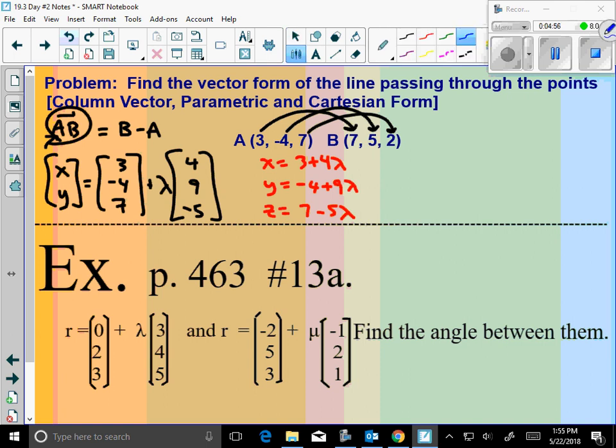Cartesian form. What am I solving for in Cartesian form for each of those parametric equations? Lambda. So for x, I would subtract 3 and divide by 4. For y, I would add 4 and divide by 9. And for z, I would subtract 7 and divide by negative 5. That's as far as you have to go for Cartesian form. That's done right there.